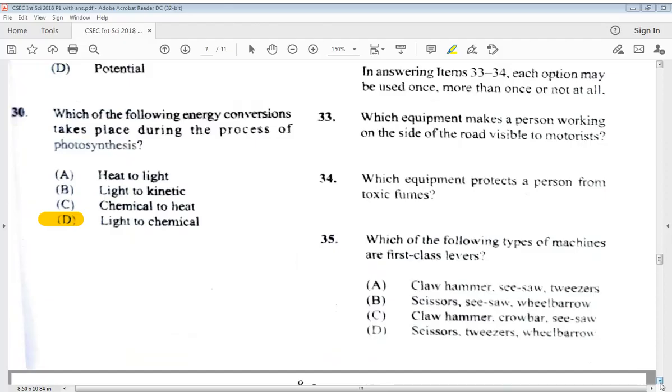Our final question says, which of the following types of machines are first class levers? A, claw hammer, seesaw, tweezers, B, scissors, seesaw, wheelbarrow, C, claw hammer, crowbar, seesaw, D, scissors, tweezers, wheelbarrow. So the answer would be C, claw hammer, crowbar, seesaw.